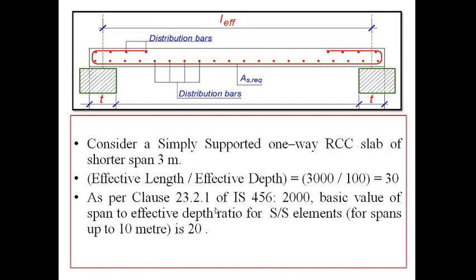If we see Clause 23.2.1 of IS 456-2000, the basic value of span to effective depth ratio for simply supported elements for spans up to 10 metres is given as 20. That means, the basic L/d ratio for a simply supported beam or slab is 20.